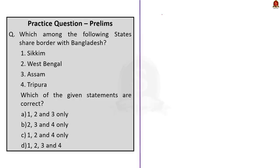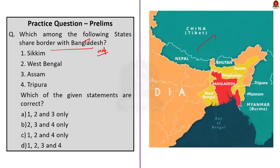The first prelims question is a map-based question asking which states share a border with Bangladesh. The answer is option B — Sikkim is not bordering Bangladesh. The states that border Bangladesh are Assam, West Bengal, Mizoram, Meghalaya, and Tripura. Knowing the bordering states for neighboring countries is very helpful for prelims preparation. The second question is regarding Project Cheetah with two statements: Statement 1 says it envisages introducing 50 cheetahs in various Indian national parks over 10 years — this is incorrect, as the plan is 50 cheetahs over 5 years. Statement 2 says cheetahs from Iran were introduced in Kuno National Park — this is also incorrect, as cheetahs were brought from Namibia.